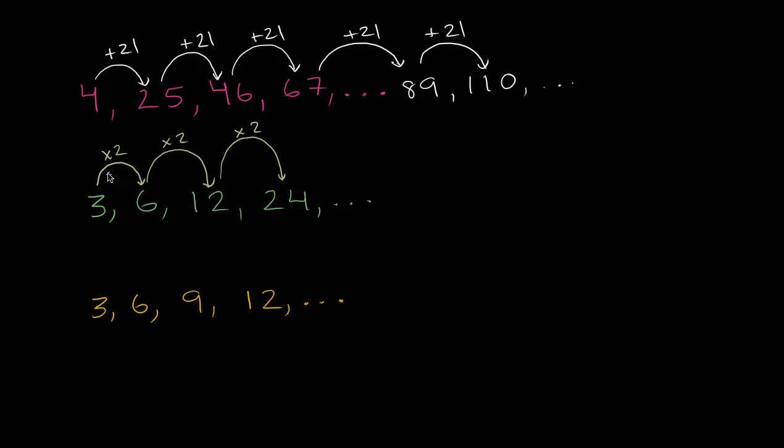So the pattern here, it's not adding a fixed amount, it's multiplying each number by a certain amount, by two in this case, to get the next number. So three times two is six, six times two is 12, 12 times two is 24.